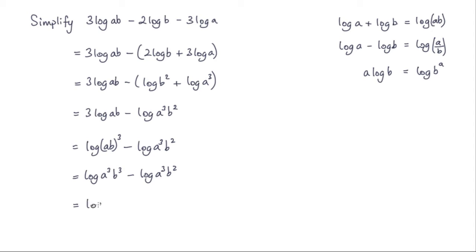So we've got log of a cubed b cubed. And that's divided by this part here, a cubed b squared. Now what I can do, I can actually simplify these terms in the brackets here. The a cubed terms will cancel. The b cubed and the b squared will cancel. And that will just leave me with log b.